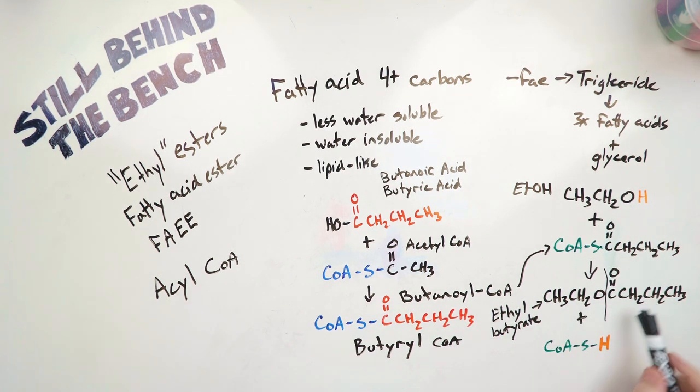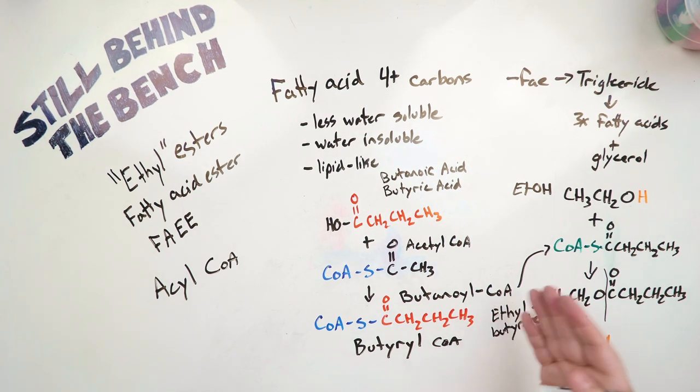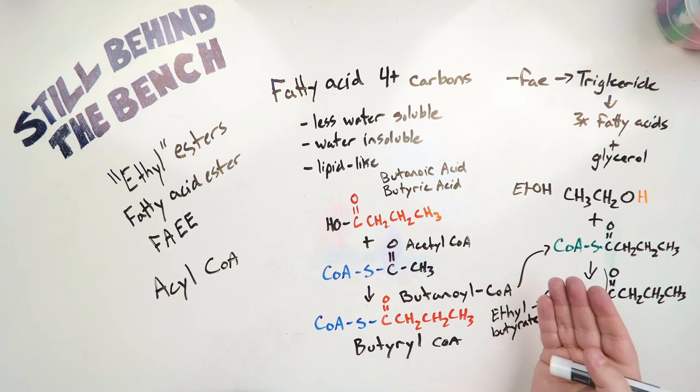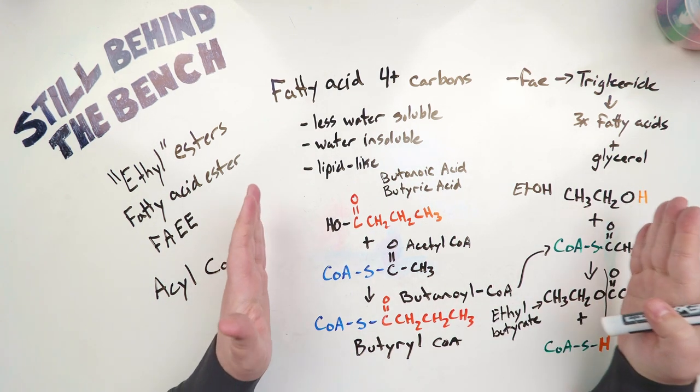So we have ethyl butyrate, or ethyl butanoate. So yeah, this is our fatty acid ethyl ester in this case. But it could be ethyl octanoate. It could be propyl butanoate. It doesn't have to be an ethyl group, and it doesn't need to be butyrate. It could be some of the really long chain fatty acids. Like oleic acid, it could come out as ethyl oleate, which would be a massive molecule.